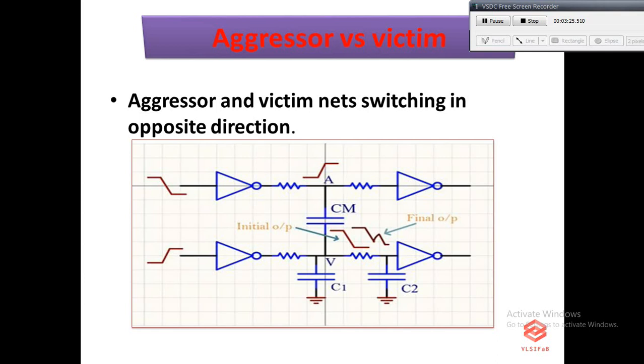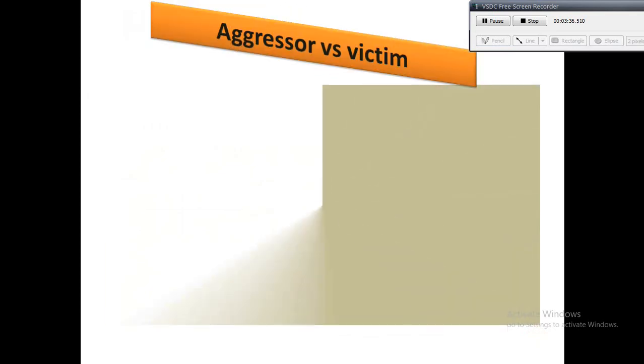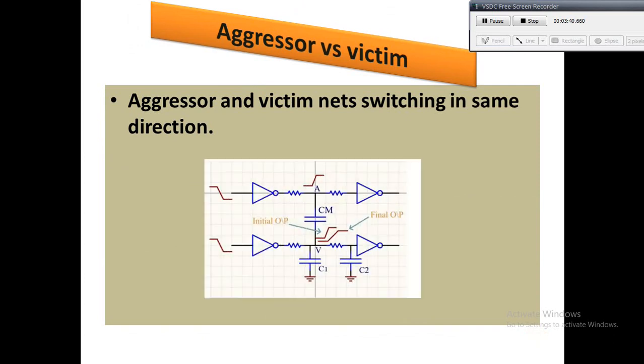In the earlier slide I showed you when the directions are opposite. Now we will see if the directions are in the same direction. If both nets are switching in the same direction, refer to this diagram. The delay of the victim net will reduce and the transition becomes sharper, which leads to hold timing violation.